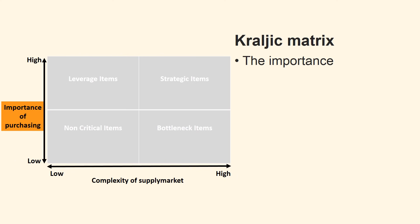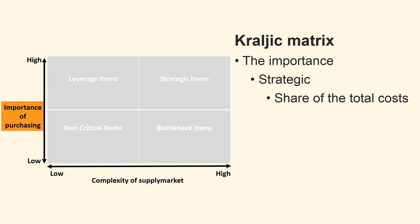Now we shall consider the second of the two dimensions, namely the importance of purchase. The key here is to understand the strategic importance of purchasing for the company. It may concern the percentage share of raw materials in the total costs, how much influence raw material prices have on the profit of the end product, as well as their impact on profitability of the firm.